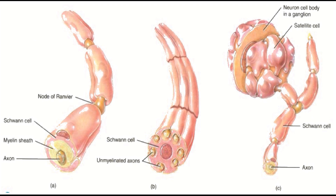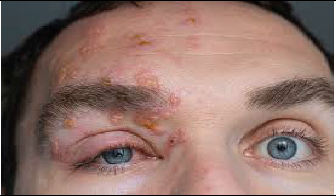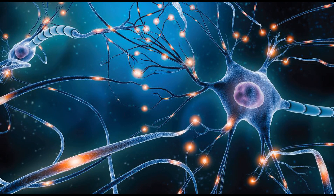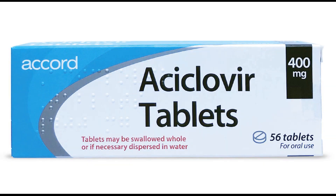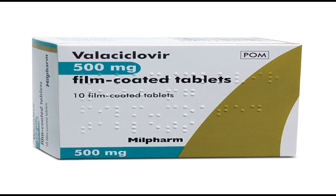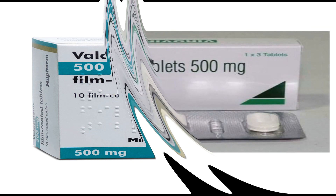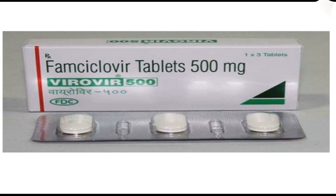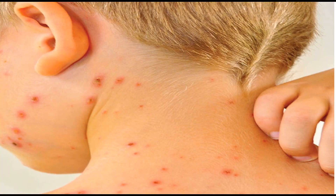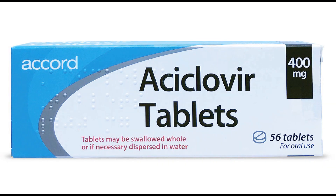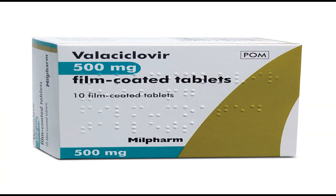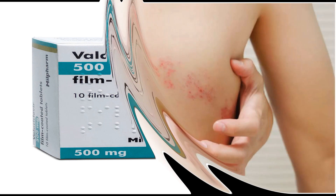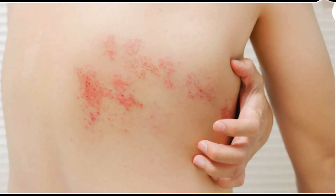Treatment of herpes zoster infection focuses on relieving symptoms and preventing complications. Since this is a viral infection, antiviral medications such as acyclovir, valacyclovir, and famciclovir can help reduce the severity and duration of the infection if started early. Pain medications, topical creams, and even anti-convulsants may also be prescribed to manage the pain and discomfort.